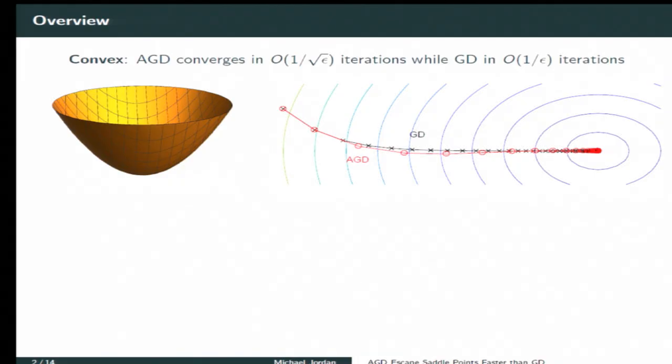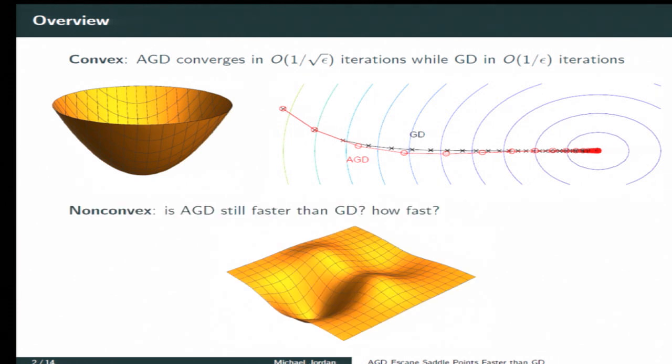So what about the non-convex case? Can we really start talking more about not just Lipschitz gradients and so on, the simple form of geometry, but more serious geometry involving things like saddle points and other singularities? So here's a little picture just to remind you. Accelerated gradient descent hops along faster. It goes as one over square root of epsilon iterations instead of one over epsilon.